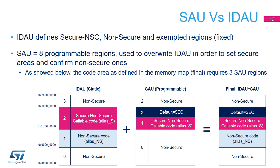The STM32L5 security attribution units have the following features. The fixed IDAU has a granularity of 64 MB and supports secure, non-secure callable, non-secure, and exempted regions. The programmable SAU supports eight regions featuring non-secure, secure non-secure callable attributes. Unmapped regions are secure by default. The resulting attribute when IDAU and SAU regions overlap is the most conservative one.